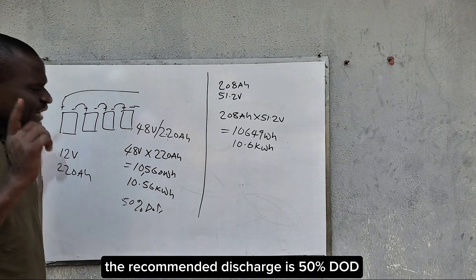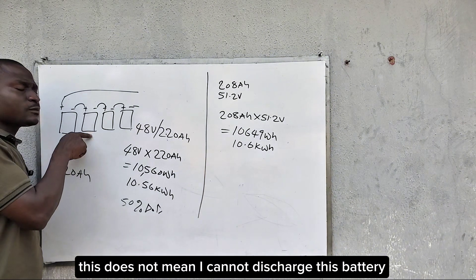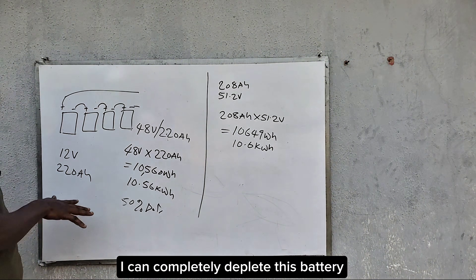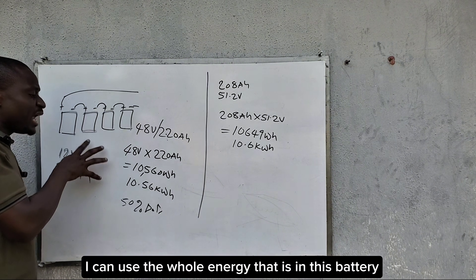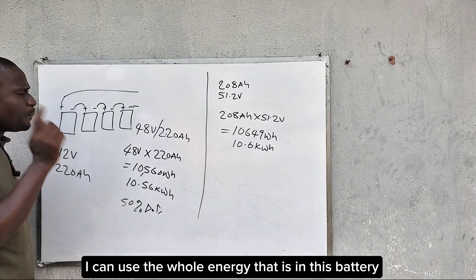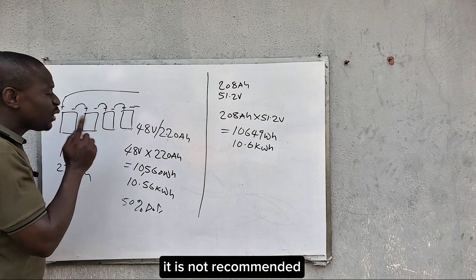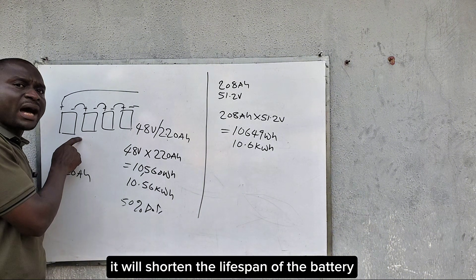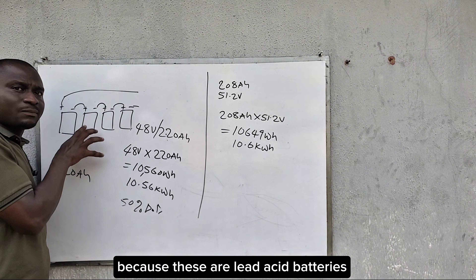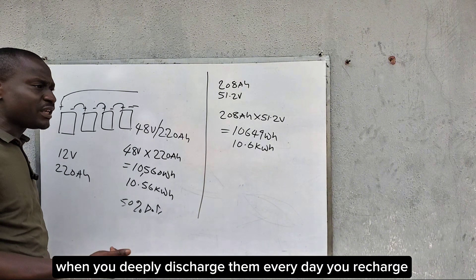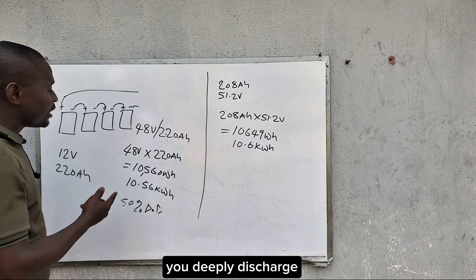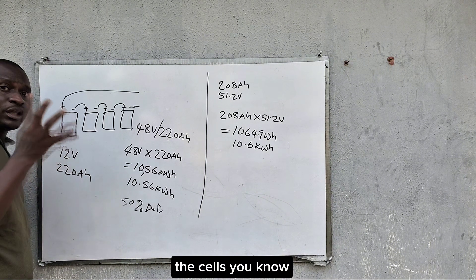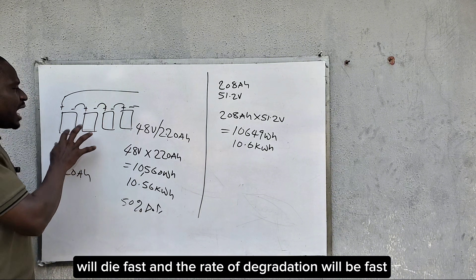When we say 50% DoD recommended, this does not mean I cannot discharge the battery up to 100%. I can completely deplete it and use all the energy in it. But since it is a lead acid battery, it is not recommended, because if I do that every day it will shorten the lifespan. When you deeply discharge lead acid batteries every day, the cells will die fast and the rate of degradation will be fast.